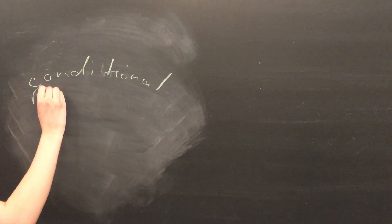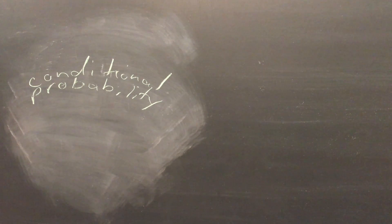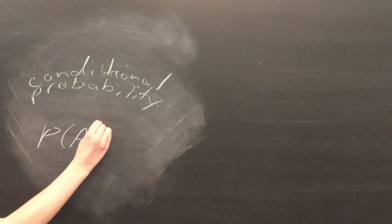You might recognize this concept from probability theory as conditional probability. We could, for example, model the probability of a piece being in a certain key given the pitches in the melody using something called Bayes' rule.